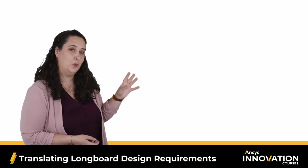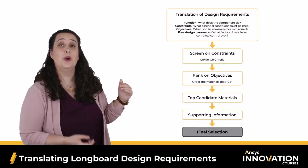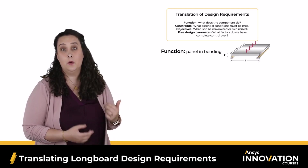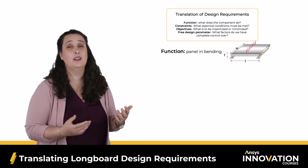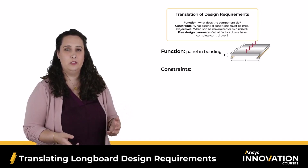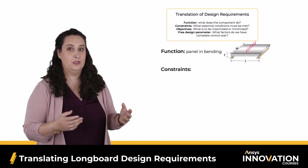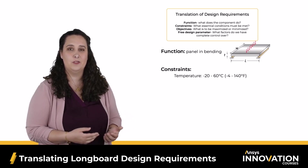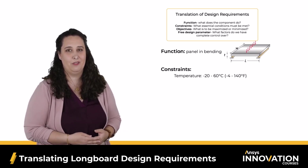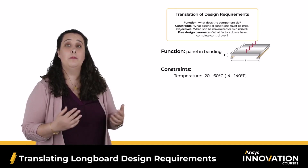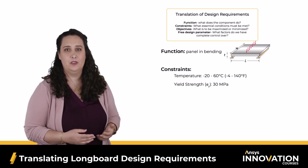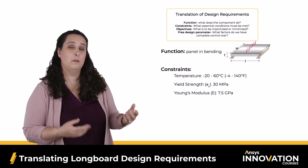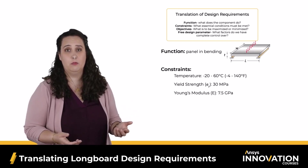Using our Ashby selection methodology shown on screen, let's go through and select the top candidate materials, starting with our translation step. The function — the load bearing of this board — we can think of it like a panel in bending. The constraints include a range of acceptable temperatures: negative 20°C to 60°C, or minus 4°F to 140°F. We also have a minimum strength of 30 MPa and a minimum Young's modulus of 7.5 GPa, values determined using plywood — a common longboard deck material — as a reference.